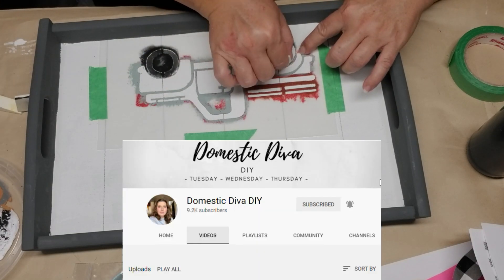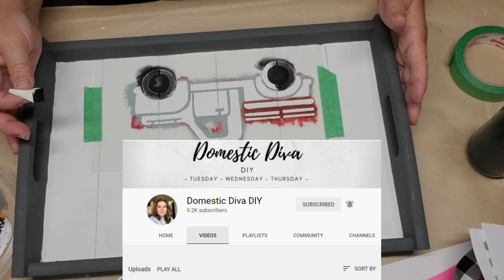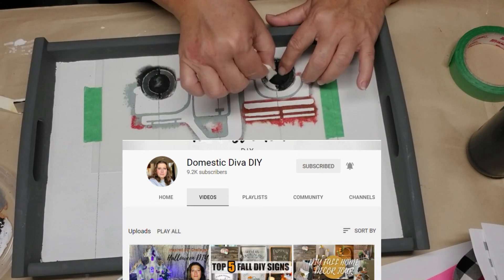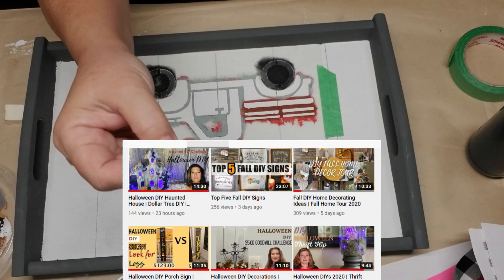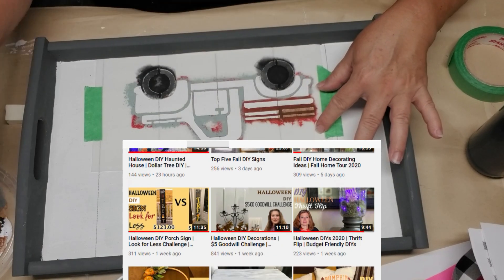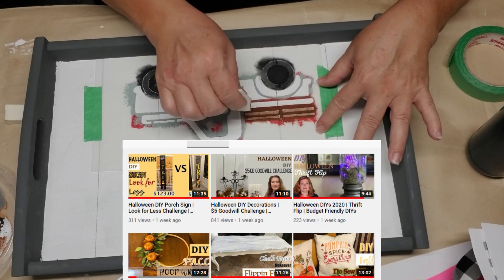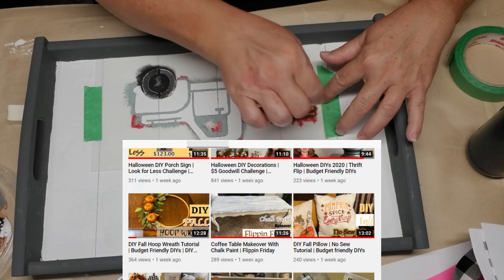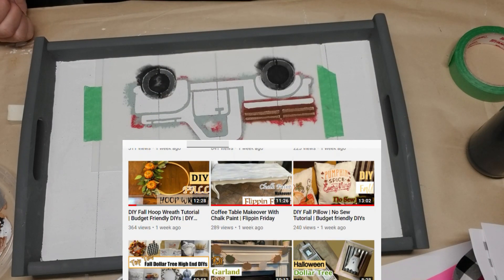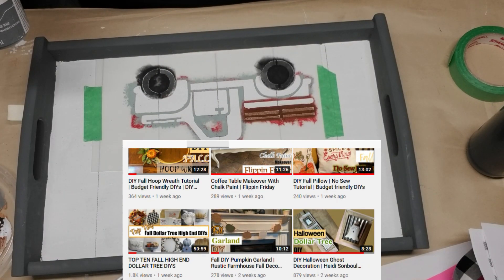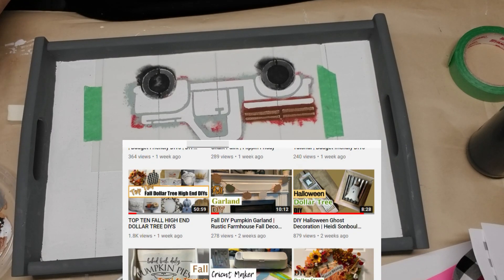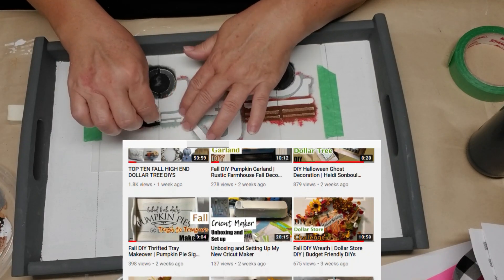I am participating in a challenge hosted by my very good friend Sonia at Domestic Diva DIY. She asked us to do a DIY challenge for fall or Halloween, so I decided to do a little bit of a farmhouse Halloween theme for you today. If you haven't seen Sonia's channel, please go over and check it out. Her link will be down in my description box.